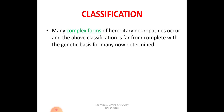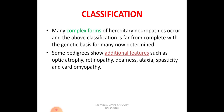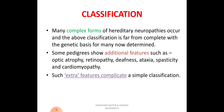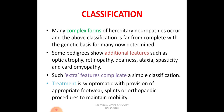Many complex forms of hereditary neuropathies do not fit into any of these classifications. Some neuropathies have additional features like optic atrophy, retinopathy, deafness, ataxia, spasticity, and cardiomyopathy, affecting the cardiac system as well. Because of these additional features, it becomes difficult to fit them into a simple classification, which is why HMSN is described as a heterogeneous group of disorders.